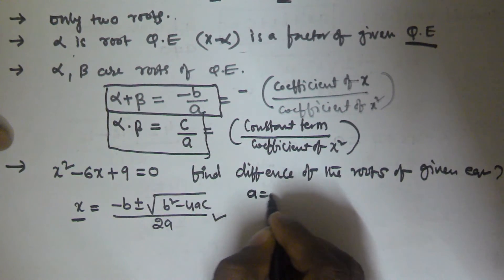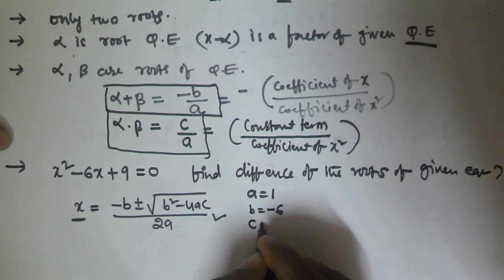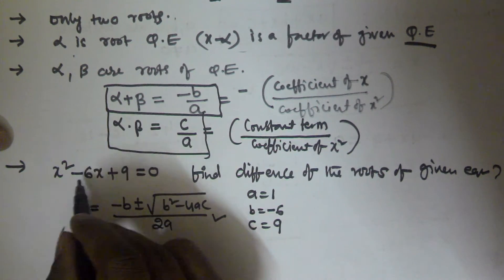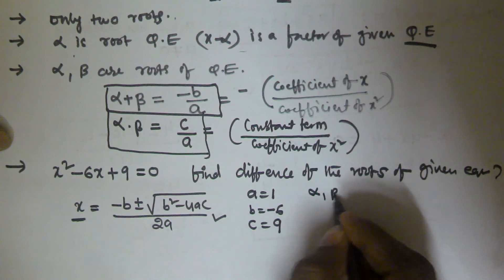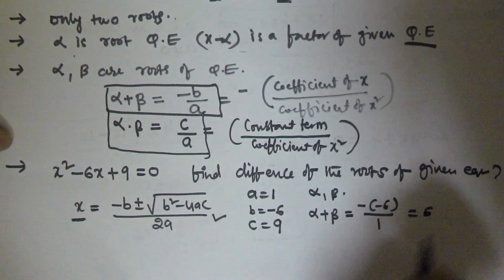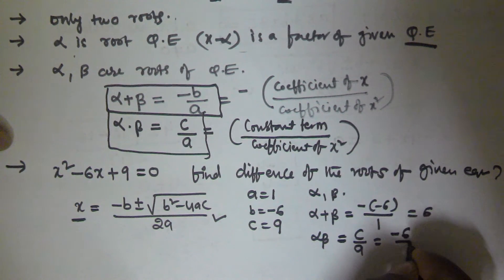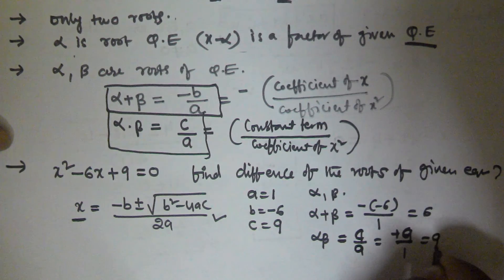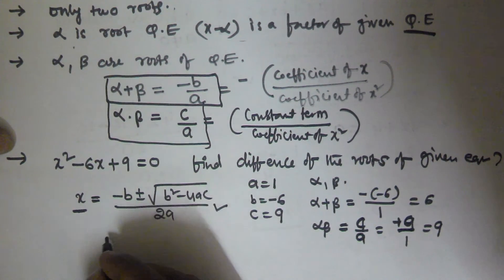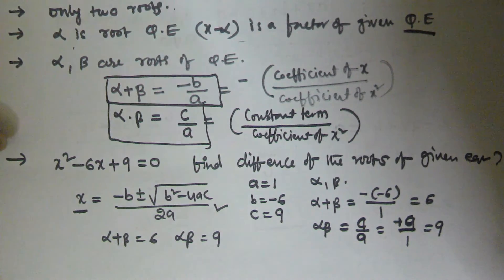In the equation x² minus 6x plus 9 = 0, we have a = 1, b = minus 6, and c = 9. So alpha plus beta equals minus b by a, which is minus of minus 6 divided by 1, giving us 6. And alpha times beta equals c by a, which is 9 divided by 1, giving us 9.